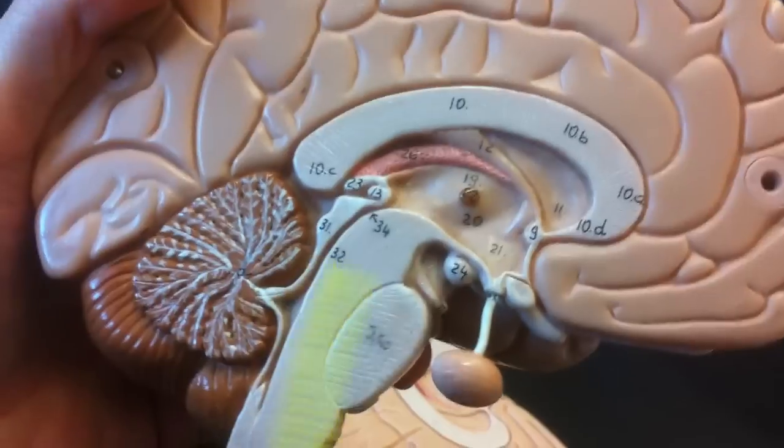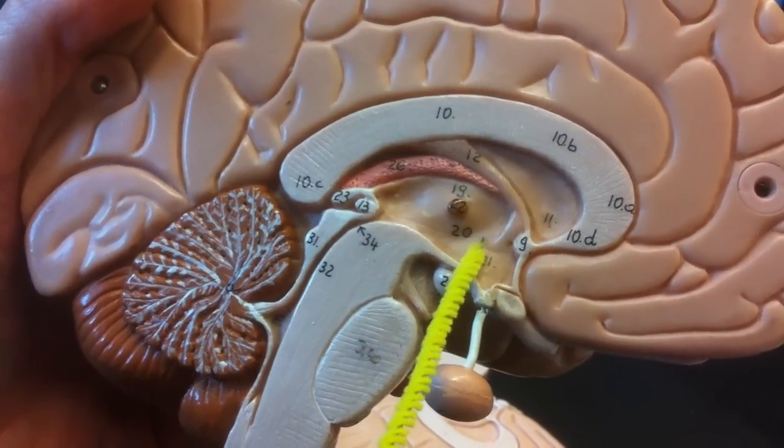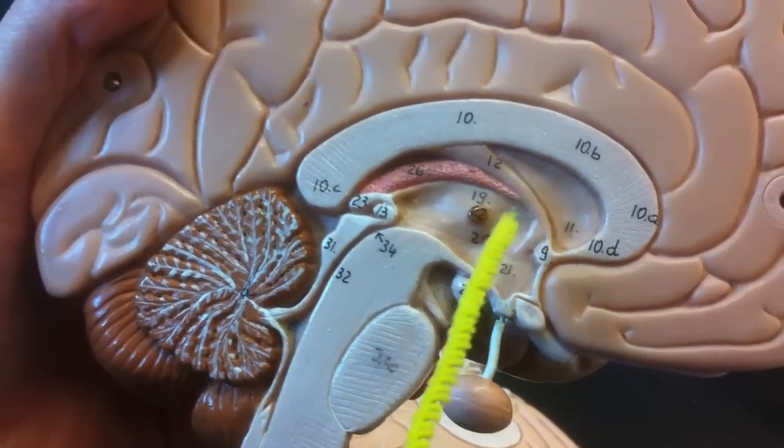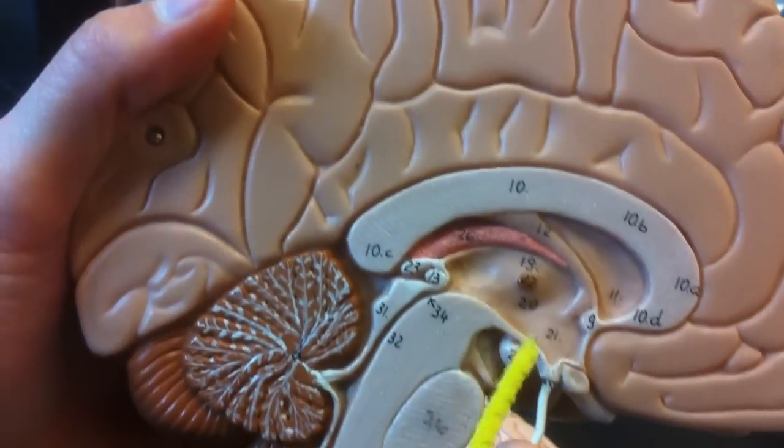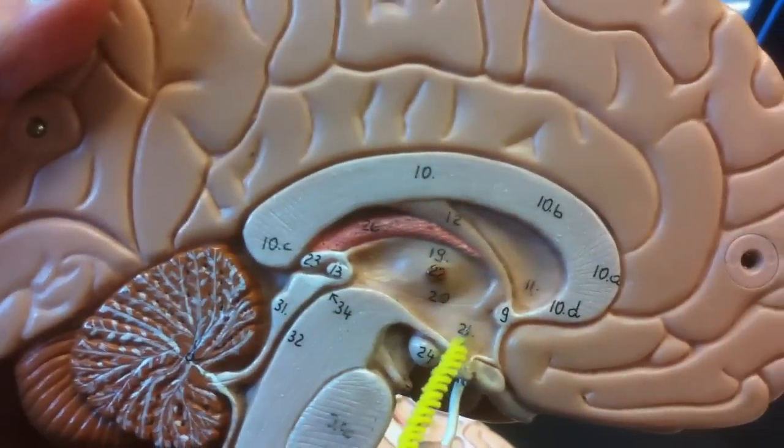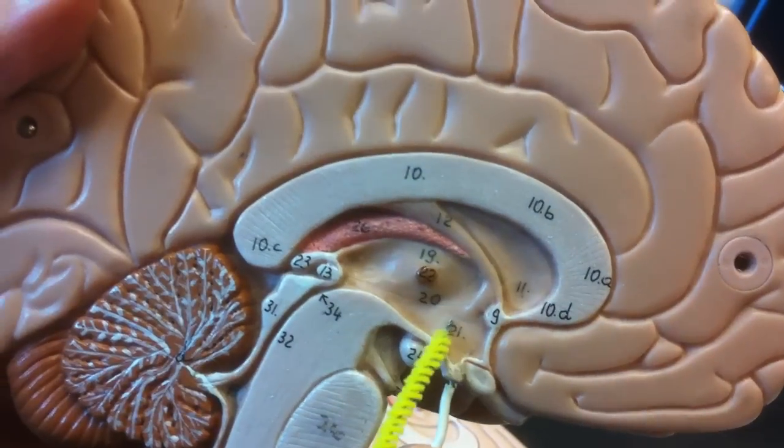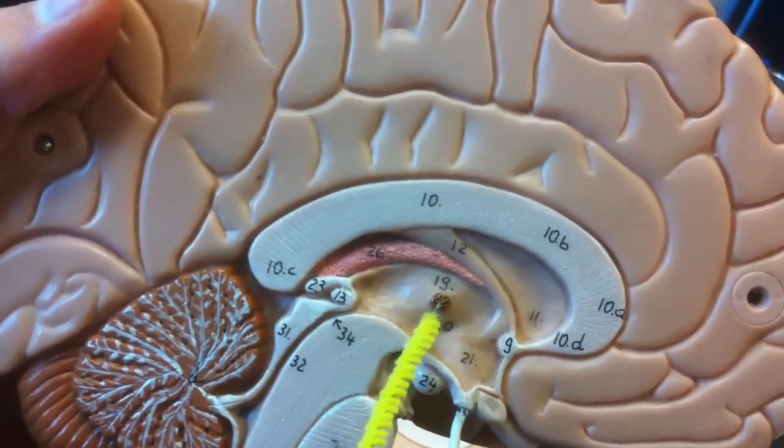The thalamus. Twenty-one. No. Nineteen. Nineteen is the thalamus. And the hypothalamus. Hypothalamus is twenty-one. The intermediate mass of the thalamus. Twenty-two.